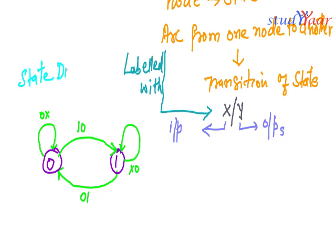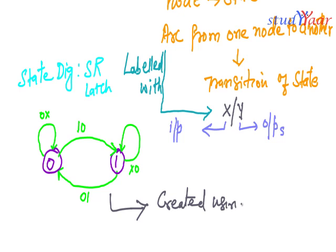So what is this? This is state diagram for SR latch. How it is created? This is created using excitation table, right, excitation table.